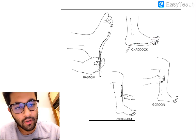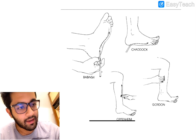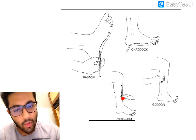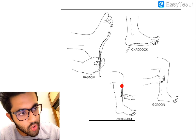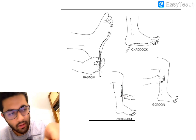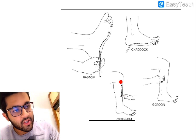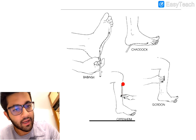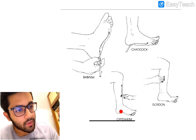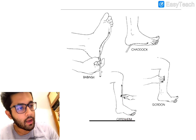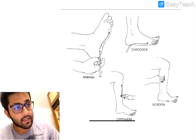The Oppenheim sign is also an exam favorite. You apply pressure with your hand or an instrument over the anterior medial aspect of the tibia — the shin — starting just below the patella and moving downward. As you move down, you see the Babinski response in the foot.